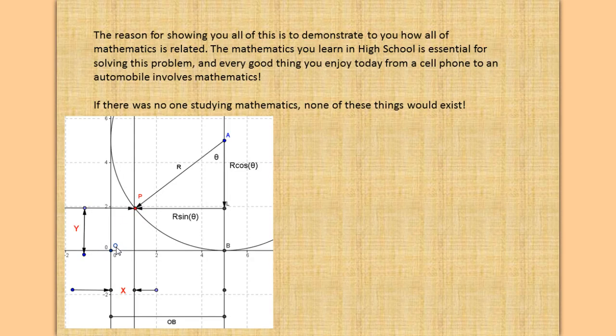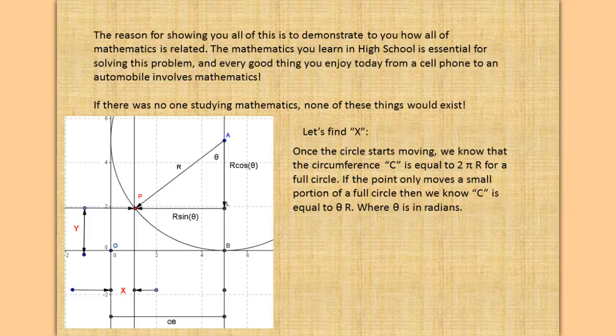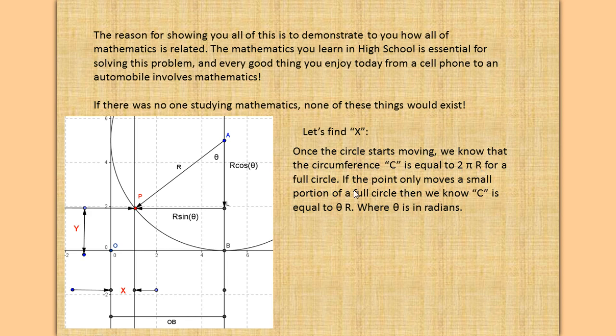Let's find X. Once the circle starts moving, we know that the circumference of a full circle is equal to 2πr for a full circle, because we learned that in 9th grade geometry. If the point only moves a small part of a full circle, then we know that C is equal to θ times r, where θ is in radians. θ equals 2π. C equals 2πr equals r times θ. 2π equals 360 degrees.